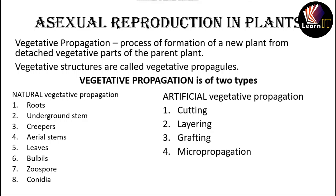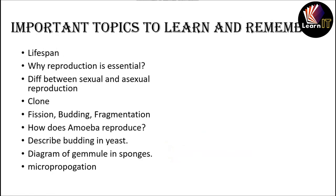The last method is micropropagation. This method includes propagation of plants by culturing cells, tissues, and organs in a laboratory — which is called tissue culture. So micropropagation is also called tissue culture.